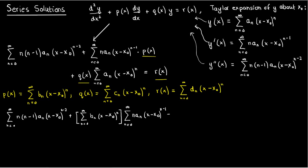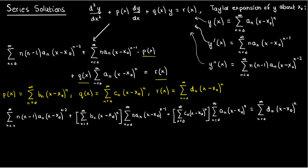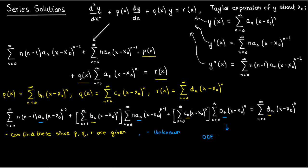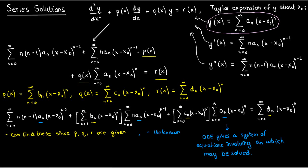Putting this all into our ODE gives us the full expanded equation. When solving an ODE, p, q, and r are generally given to us, so we can easily find the coefficients b_n, c_n, and d_n in their Taylor series expansions. We also know x₀, since that's something we usually set ourselves. So the only unknowns are the coefficients a_n in our series solution. Expanding everything on the left-hand side gives us a system of equations for the coefficients a_n, and if we fully solve this system we'll get our solution y(x).